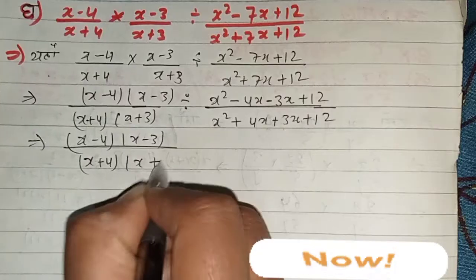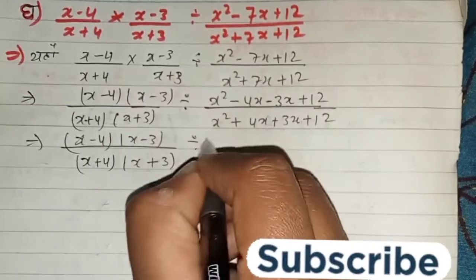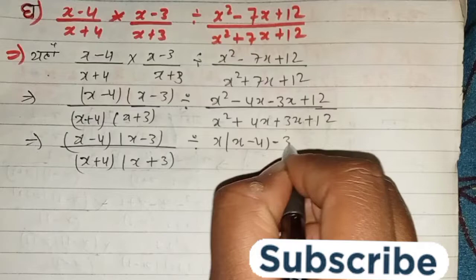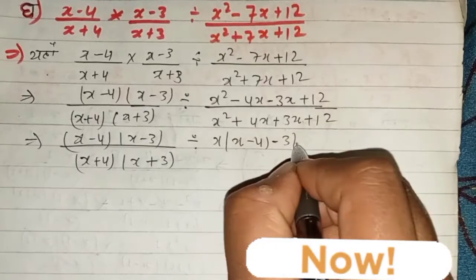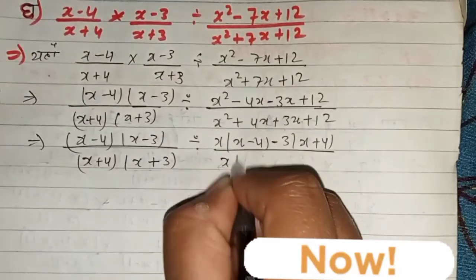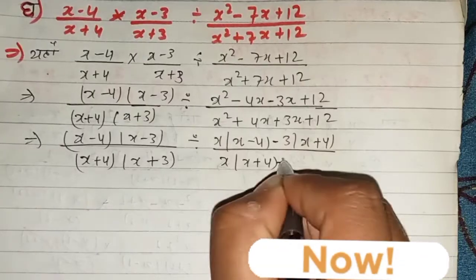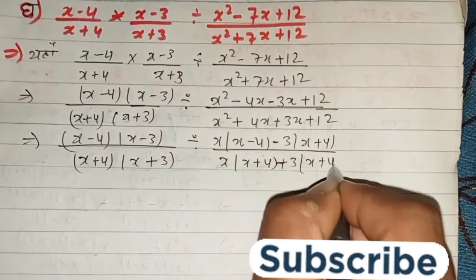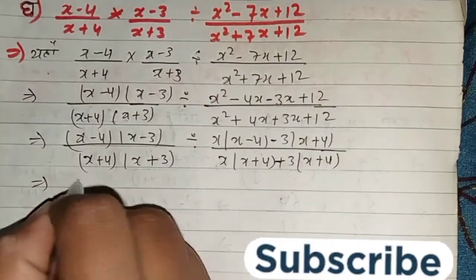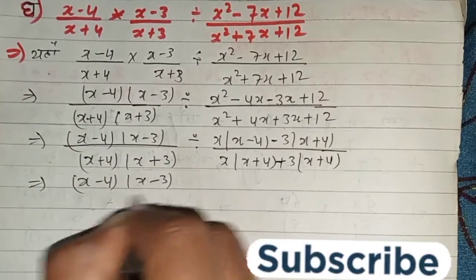Yaku yaku into x plus 3. x minus x minus 4 minus x minus 3 minus x plus 4, upon x minus x plus 4, x plus 3, minus x plus 4. Is equal to x minus 4 out of x minus 3.